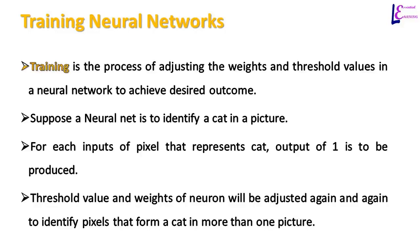Training is the process of adjusting the weights and threshold values in a neural network to achieve a desired outcome. Suppose a neural network is to identify a cat in a picture. For us humans it is an easy task, but for computers we will have to train neural networks. We will have to input each pixel in the picture that represents a cat and produce an output of 1, and with each such input, the threshold value and weights of the neuron will be adjusted again and again to identify pixels that form a cat in more than one picture.